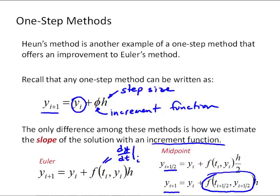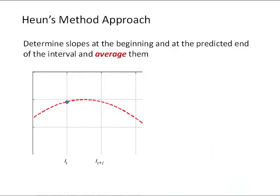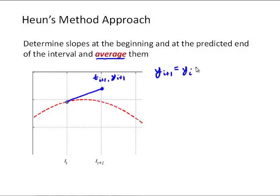We're going to look at another approach called Heun's method. For Heun's method, what we're going to do is determine the slopes at the beginning and at the predicted end of the interval and then average them. We start at some t_i and use that slope at t_i to get a predicted value at t_i+1. We get that predicted value using forward Euler: y_i+1 predicted equals y_i plus f(t_i, y_i) times h.